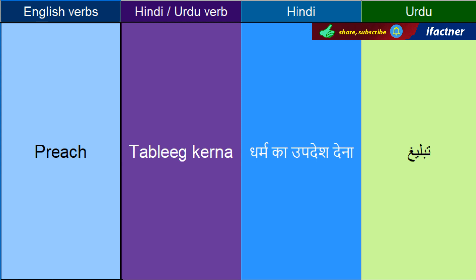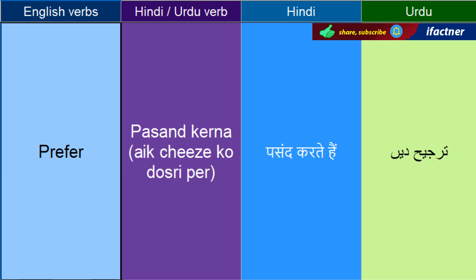Tablighh kerne ko — Preach. Pasand kerna, ya pher ek cheez ko doosri cheez per terjih dihne ko — Prefer. I prefer tea over coffee — main coffee ke ooper chai ko terjih diata hon, yaani ki usay ziadha pasand kerta hon chai peena.